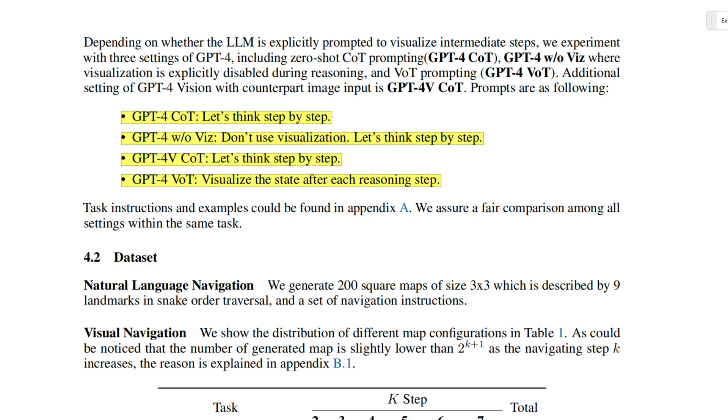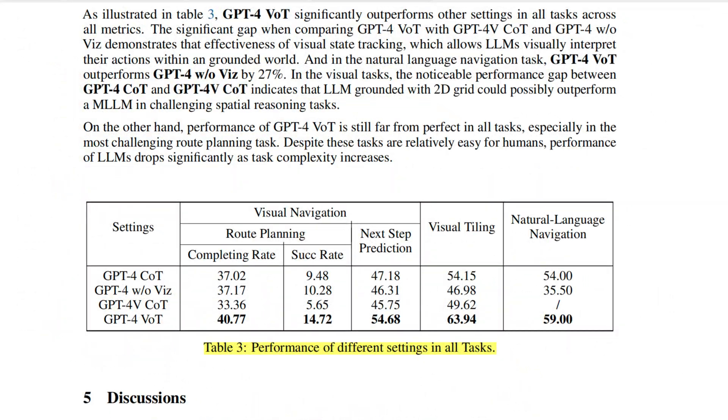First, we have GPT-4 employing the chain-of-thought method, where it processes information step-by-step without visual aids. Next, there's GPT-4 without visualization, again focusing on step-by-step reasoning but explicitly without employing the visual techniques we're discussing today. Then we have GPT-4 with vision, which enhances its ability to interpret visual content within an image. Finally, GPT-4 with visualization of thought actively visualizes the state after each reasoning step to enhance comprehension and decision-making.